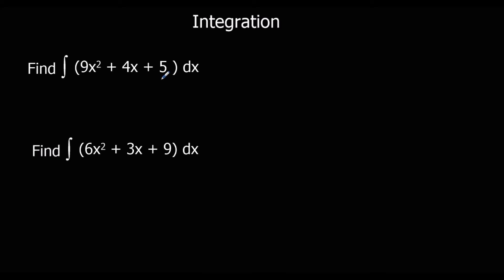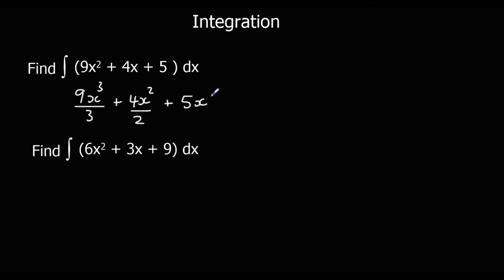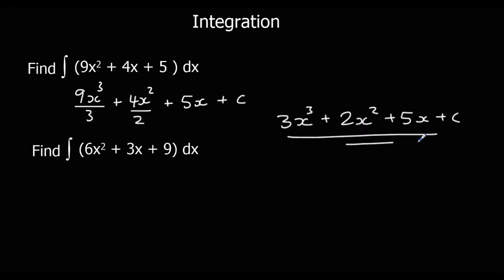Find the integral of this with respect to x — that just means we're integrating in terms of x. So we add 1 to the power and divide by the new power. The power goes from 2 to 3, divide by 3. Then 1 goes to 2, divide by 2. Then 10 goes to 10x. Plus c. Simplifying: 9 divided by 3 is 3, so 3x cubed; 4 divided by 2 is 2, so plus 2x squared; plus 5x; plus c. That's the answer.